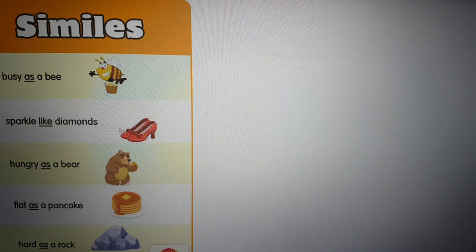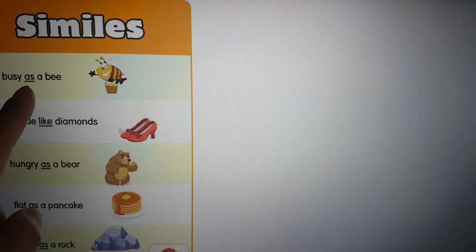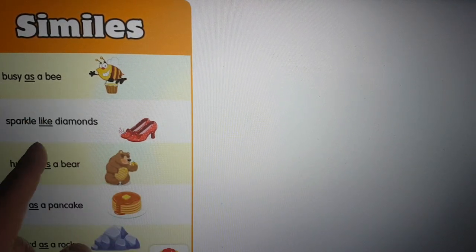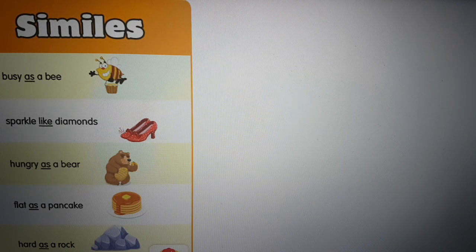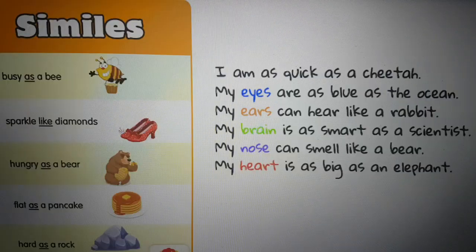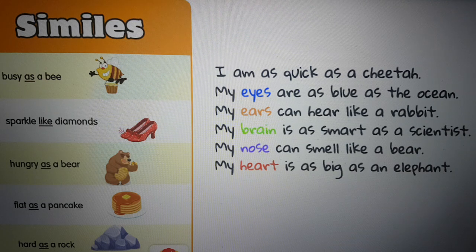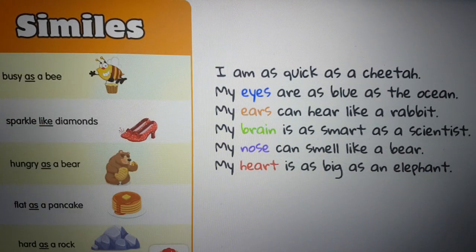So similes. Busy as a bee — you can see here, busy as a bee. Sparkle like diamonds — we're using the word 'like.' Hungry as a bear, flat as a pancake, or hard as rock. These are what we call similes when you're using 'as' or 'like.' For example: I am as quick as a cheetah, my eyes are as blue as the ocean, my ears can hear like a rabbit, my brain is as smart as a scientist, my nose can smell like a bear, and my heart is as big as an elephant. These are called similes — that is S.